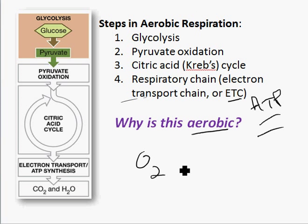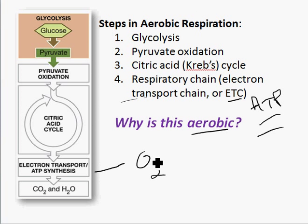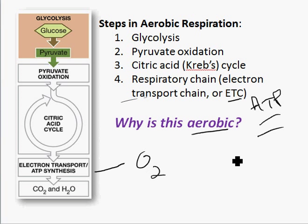But where do we use the O2? This was in the electron transport chain. O2 is what we call the terminal electron acceptor in the electron transport chain. So in order for all these steps to occur — steps 1, 2, 3, and 4 — we need the electron transport chain working, and that means we need oxygen present.